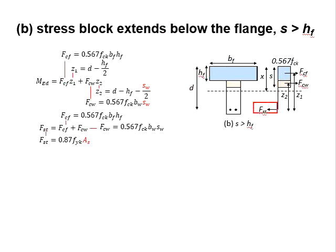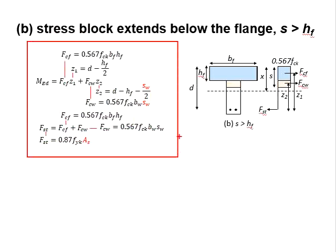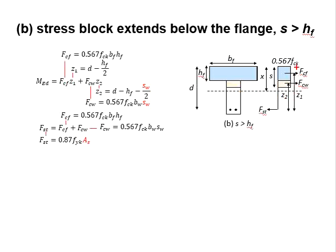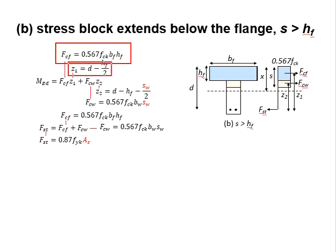The tension steel bar is acting in the opposite direction to the compressive forces. To determine the moment of the section, it is obtained by multiplying the compressive force of the flank, FCF, with the lever arm Z1, plus the compressive force of the web, FCW, multiplied with the lever arm Z2. The forces FCF and FCW, and the lever arms Z1 and Z2, are given in the equations shown here.